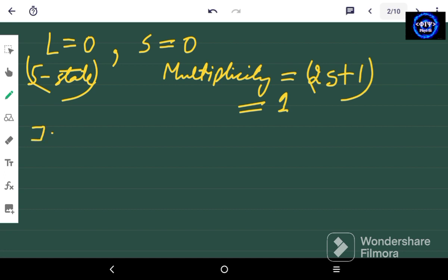The value of J lies from L minus S to L plus S. So we have L equals 0 and S equals 0. It means the only value of J can be J equals 0.